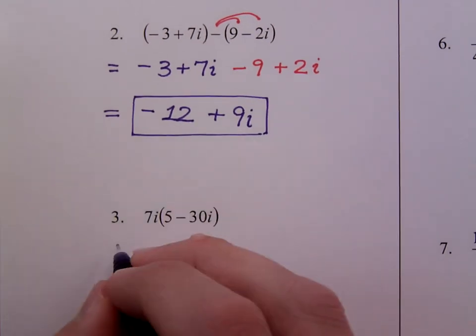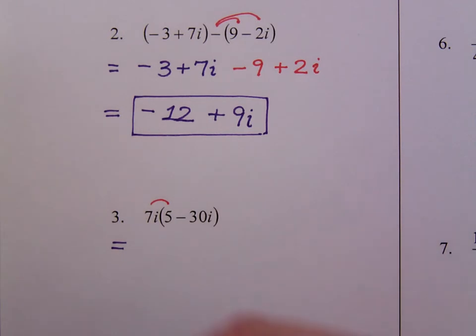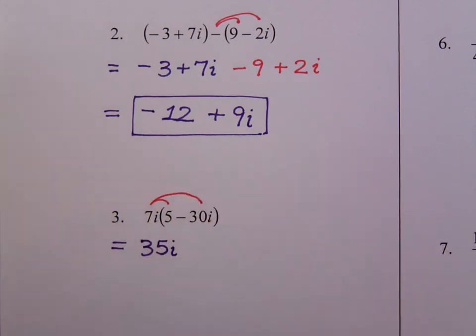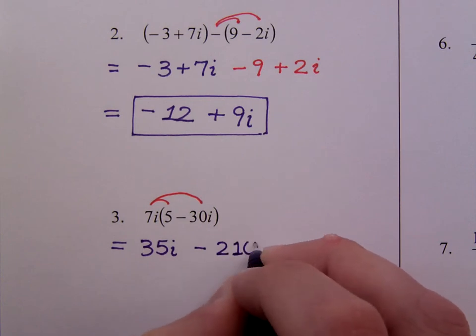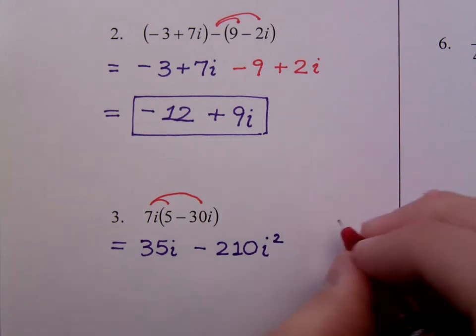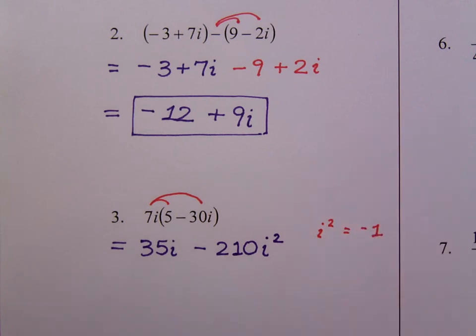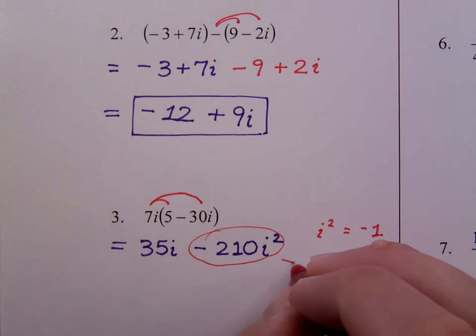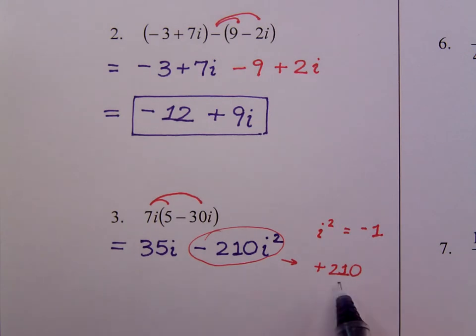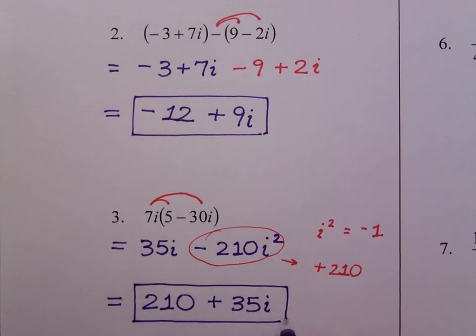Number 3 is multiplication. So when I distribute here, that gives me 35i negative 2i. And then here would give me negative 210i squared. Now at the top of this page we mentioned that i squared is a negative 1 factor. So that means this guy right here really becomes a positive 210. That i squared becomes a negative 1 factor. Negative times negative is positive. So I'm going to put this in the correct order. The real part is 210 and the imaginary part is 35i. That's the one trick you have to watch out for here. i squared becomes negative 1.